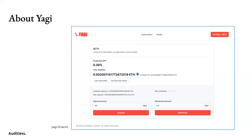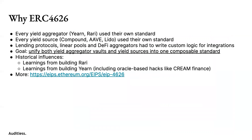What was the motivation of ERC-4626? Why does it exist? Historically, every yield aggregator used their own standard. They were similar in the sense that most yield aggregators were smart enough to represent their shares as ERC-20 tokens so you can actually trade them, but in terms of how you actually mint and burn tokens, they were fairly different. There are also a lot of other things besides yield aggregators that look the same — yield sources like Compound, Aave, and Lido — that take some tokens, compound them, and return them back.